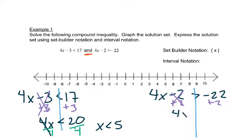That leaves us with 4x is greater than negative 20. We'll divide both sides by 4. We get x is greater than negative 5.